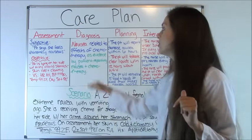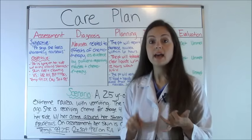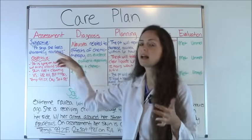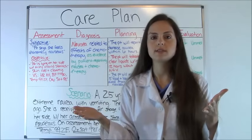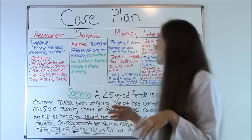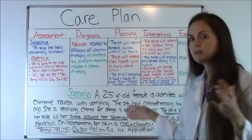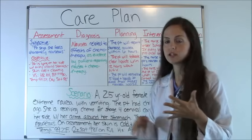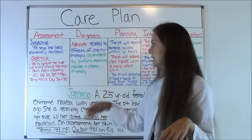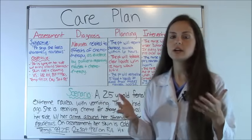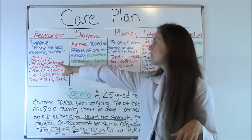Now step two, we're going to look at our assessment part — what we found in our scenario. The main things we're looking for are subjective data and objective data. Subjective data is what the patient says — their feelings, their concerns. You can't prove it; it's just based on what someone says. In our scenario, what was subjective is that the patient says she's feeling extremely nauseous. Typically there's not a lot of subjective data, but usually there's more objective data.